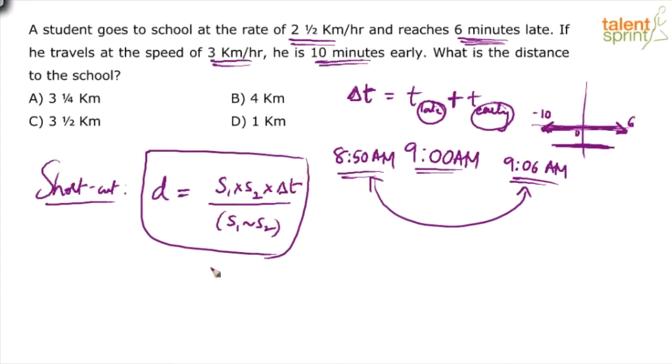Substitute the values: 2.5 × 3 × 16 minutes divided by (2.5 - 3). Now what is 2.5 - 3? 0.5. One important point to be noted here: the speeds s1, s2, and the difference are all in kilometers per hour, but the time we have taken is in minutes - 16 minutes. So the units are not balanced.